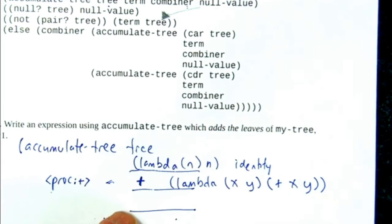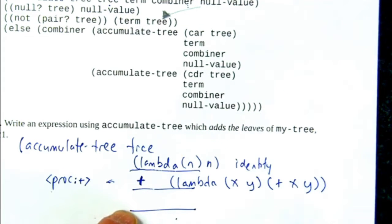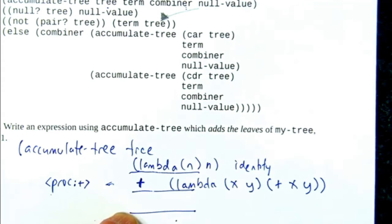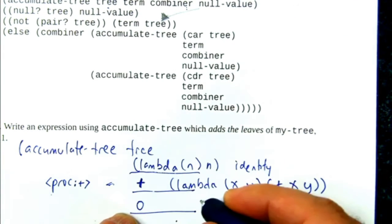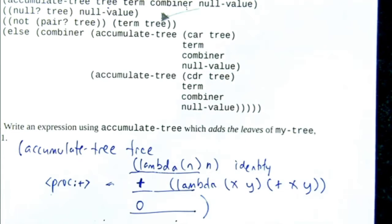And then, what's the final thing? Yeah, it's the base case. So when you've recursed down to empty list, what is the sum of the empty list? It's zero.